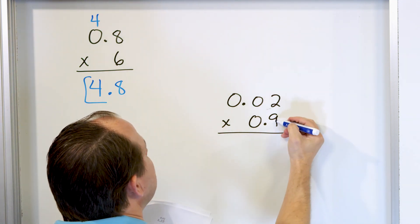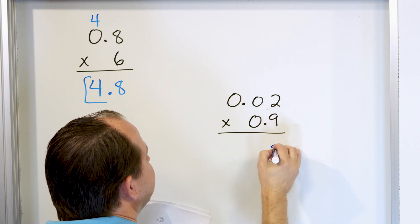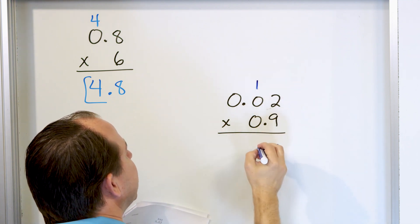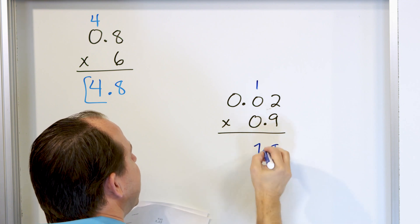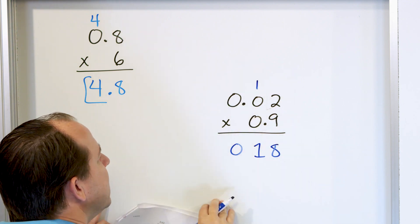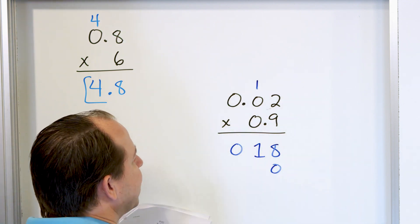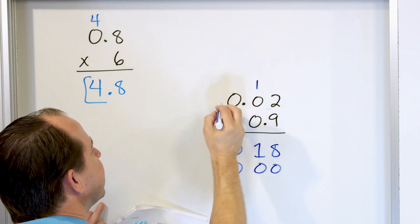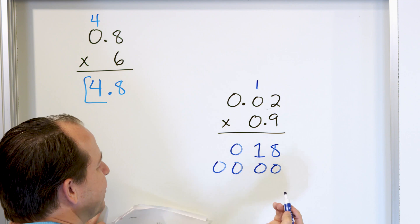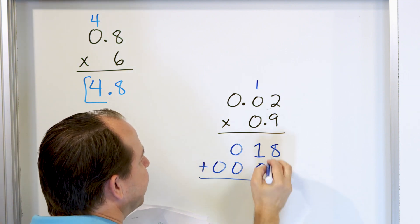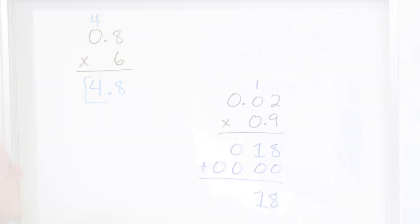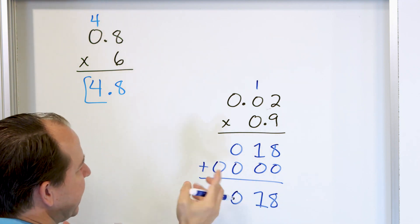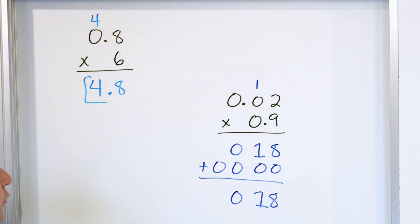We start on the right. 9 times 2 is 18, carry the 1. 9 times 0 is 0, and then one more is 1, and then 9 times 0 is 0. Now we're multiplying by 0, so we have to drop a 0, and then 0 times 0 is 0, 0 times 0 is 0, and 0 times 0 is 0 — it doesn't do much there. Now we have to add these. We have an 8 and a 1. You can add the leading zeros if you want.